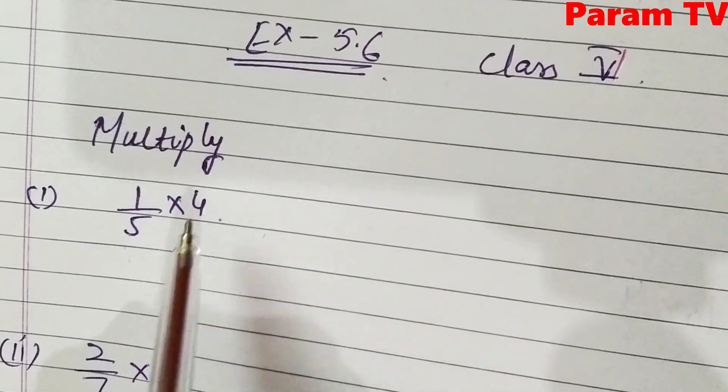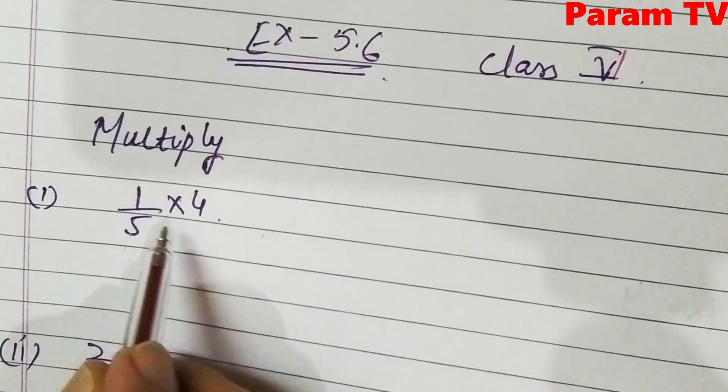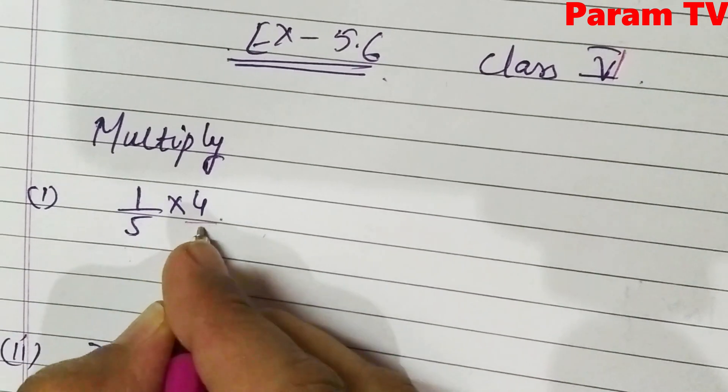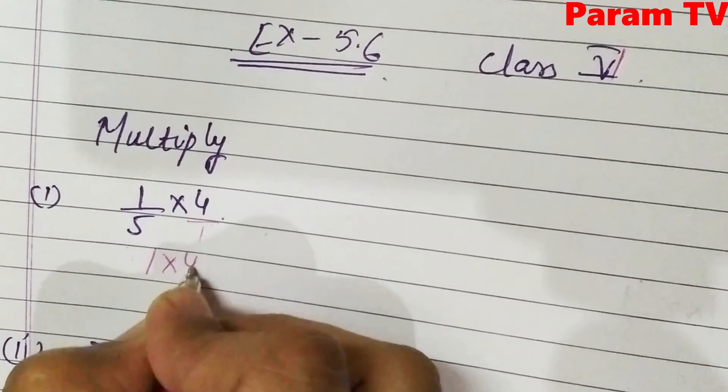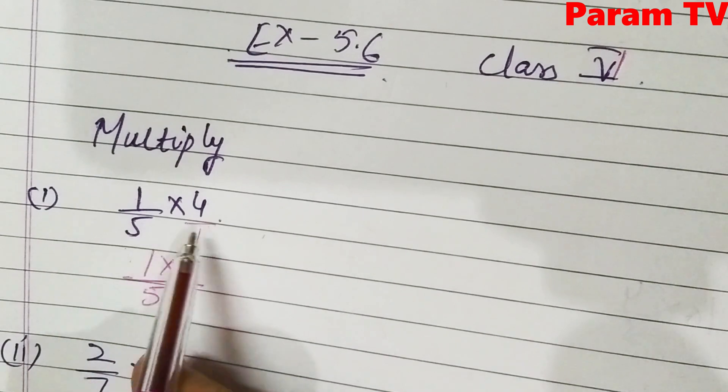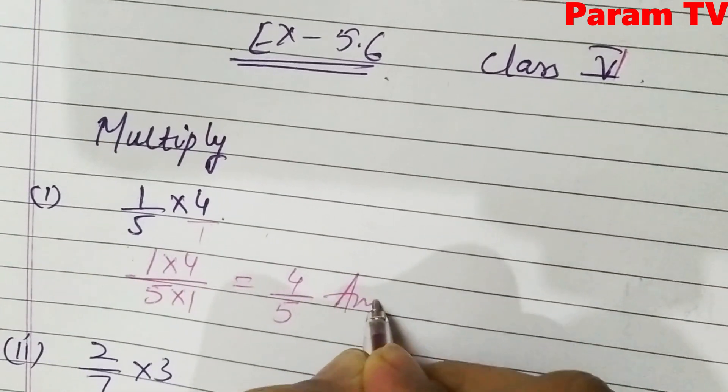1 by 5 into 4. See, in the multiply, it's simple. It's from numerator to numerator and denominator to denominator. So this is 1 into 4 over 5 into 1. Because there was nothing here, so this is 1 into 4 and this is 5 into 1. 4 1s of 4, 5 1s of 5. This is the answer.